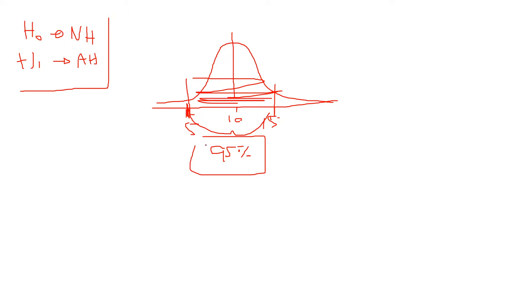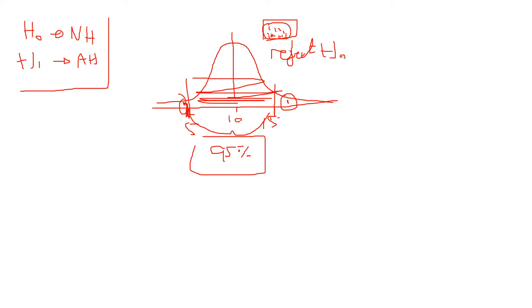Statistical significance means that if we have a sample and we gave them some sort of drug, and when we found the average of that sample, if we find that their mean is beyond the two standard deviation points, we would say that is statistically significant. It is very unlikely to get a mean there by chance, so the only logical conclusion is that the drug works. For that reason, we reject the null hypothesis.